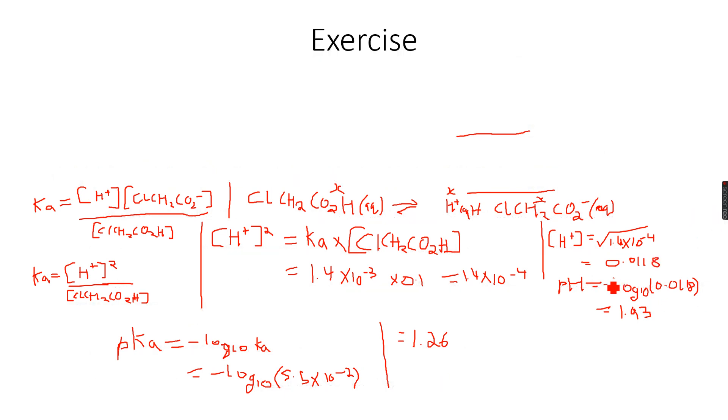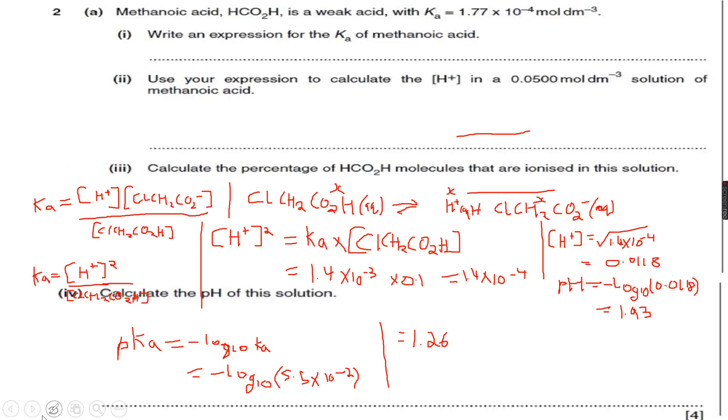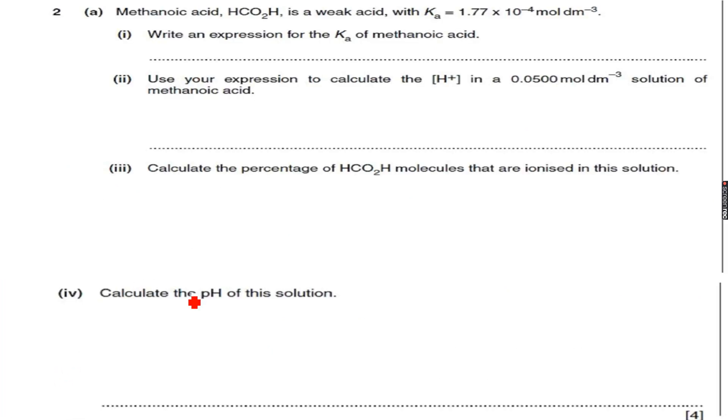So let's move forward to the next example, which is this. Methanoic acid, HCO2H, is a weak acid with an acid dissociation constant Ka of 1.77 into 10 to the power of minus 4 mol per dm cubed. Write an expression for the Ka of methanoic acid. So first let me write an equation of the dissociation of methanoic acid to help me answer this question.